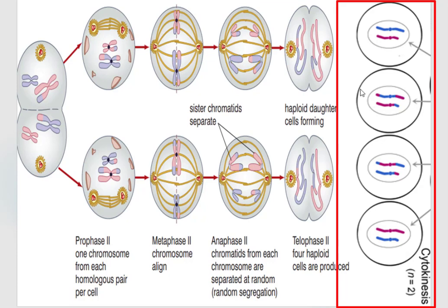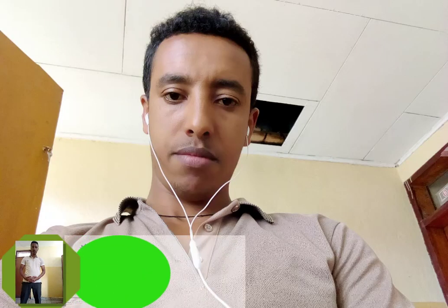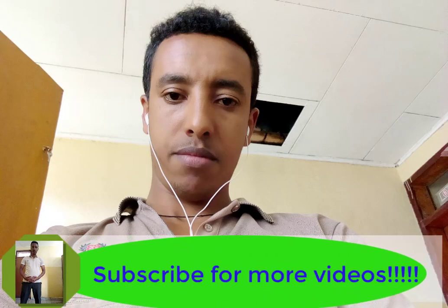Each daughter cell is different from the others and from their parental cell due to crossing over, or recombinant formation, that occurs in meiosis 1 at prophase 1.